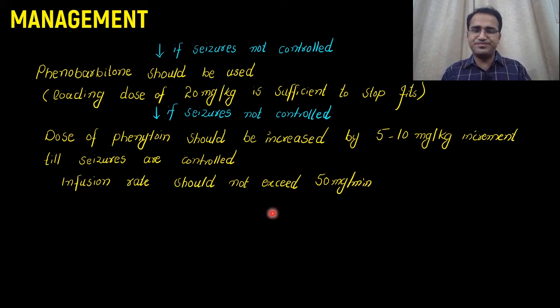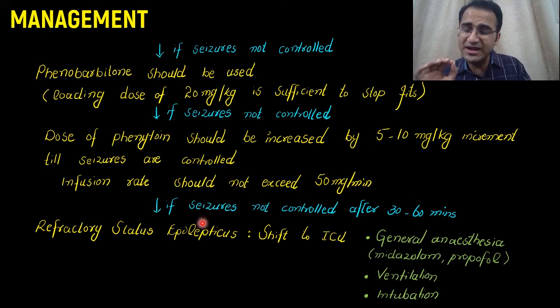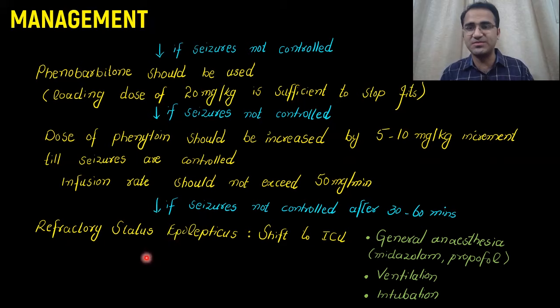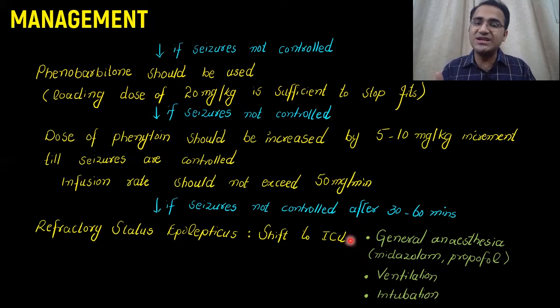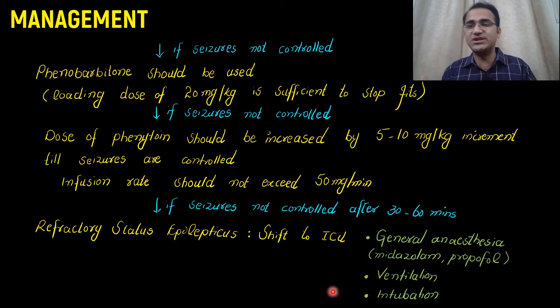If seizures are still not under control after 30 to 60 minutes — you have done everything and the patient is still seizing — this is called refractory status epilepticus. The patient is resistant to all treatment. You now need to put the patient under general anesthesia using midazolam or propofol, and shift the patient to the ICU. In the ICU, you will provide artificial ventilation and need to consider intubation.